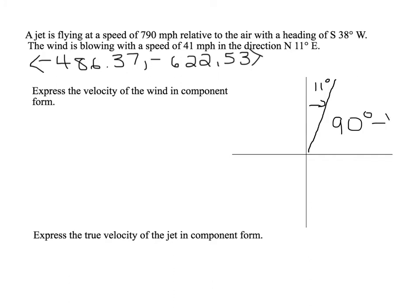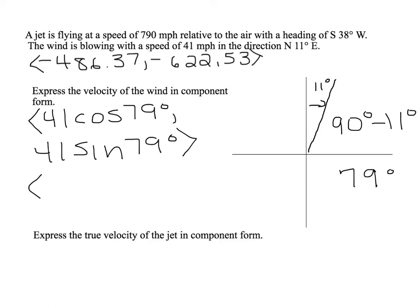So the velocity of the wind in component form is 41 miles per hour cosine 79 degrees, 41 miles per hour sine of 79 degrees, which gives me 7.82 for my horizontal component and 40.25 for my vertical component.